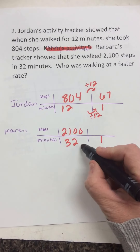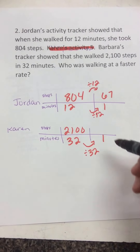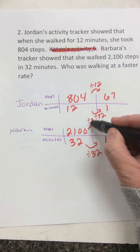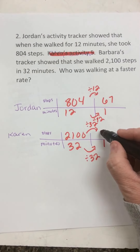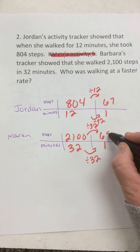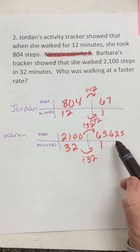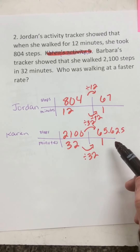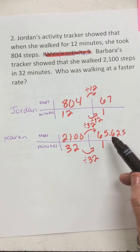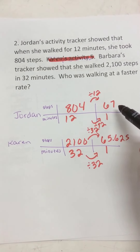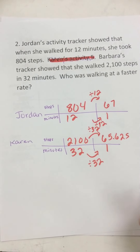Karen, on the other hand, walked for 32 minutes, so I divide by 32. Whatever I do to the bottom, I do to the top. So 2,100 divided by 32 — that's not going to be a whole number. When you divide that, you get 65.625. That's fewer steps. In one minute, Karen can walk a little over 65 steps per minute, and Jordan can walk 67. So who's walking faster? That would be Jordan, because it's more steps per minute.